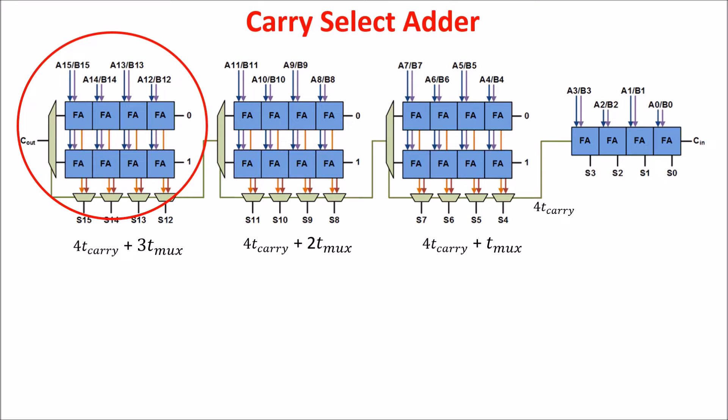So in order to exploit this time, we could put in the last block more full adders than the previous block. The same for the third block: we wait 2T-mux doing nothing, so we can put here more full adders than the previous block.